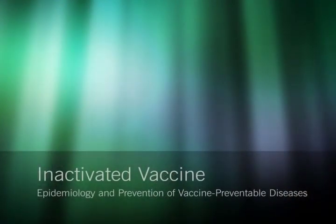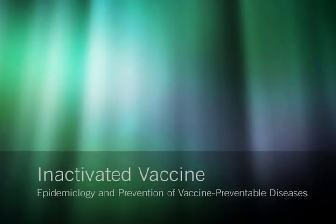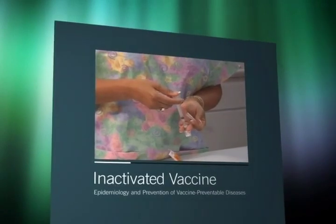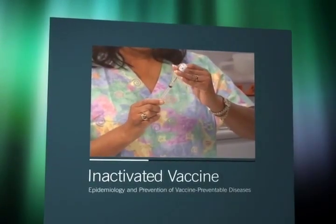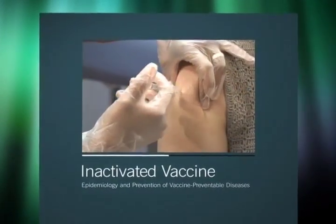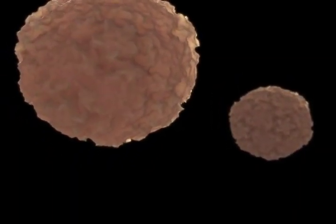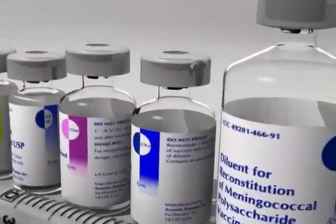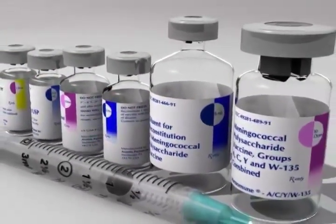The second major vaccine category is inactivated vaccine. The antigen in an inactivated vaccine is not alive but it interacts with the immune system in a way similar to live vaccines. To illustrate how inactivated vaccines work, we would like to show you our last animation. The events which produce immunity to inactivated vaccine are similar to those following infection with the disease-causing form of the organism or vaccination with live attenuated vaccine. The person is injected with inactivated antigen, which can be a whole inactivated virus or fragments of a killed virus or bacterium. Since the antigen is dead, it cannot reproduce. So larger quantities of inactivated vaccine antigen must be injected to stimulate an immune response.